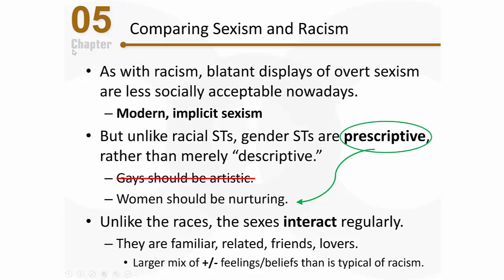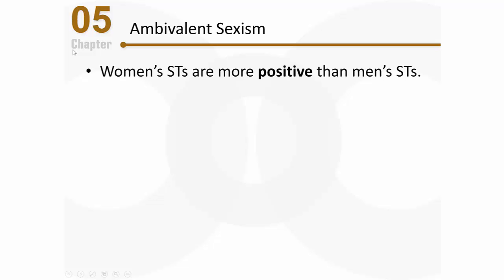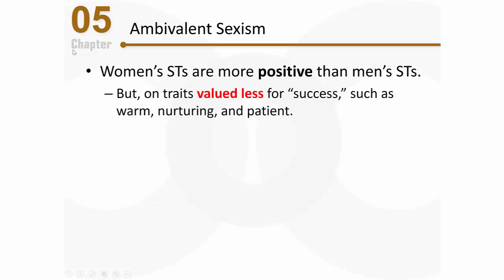It's that mix, that duality, that complexity that is the basis for ambivalent sexism. The word ambivalent refers to mixed or even contradictory feelings and beliefs about something or someone, like women in general. Women's stereotypes tend to be more positive than men's stereotypes, but those relatively positive stereotypes tend to be on traits we value less for success — as measured economically, through careers, through the business world. Things like being warm, nurturing, or patient are associated with women — positive, but less valued in those domains.